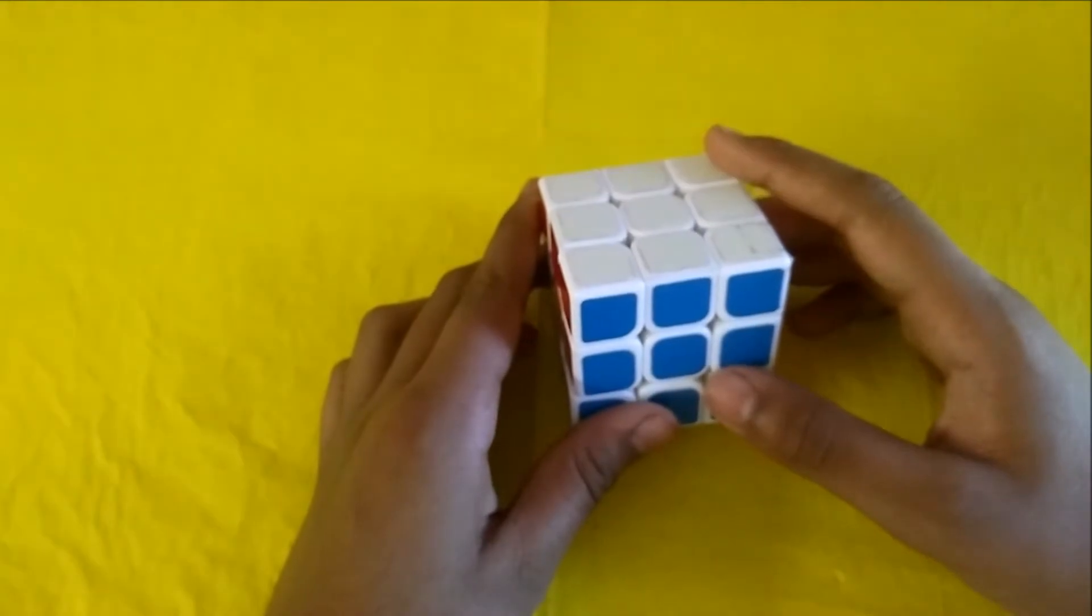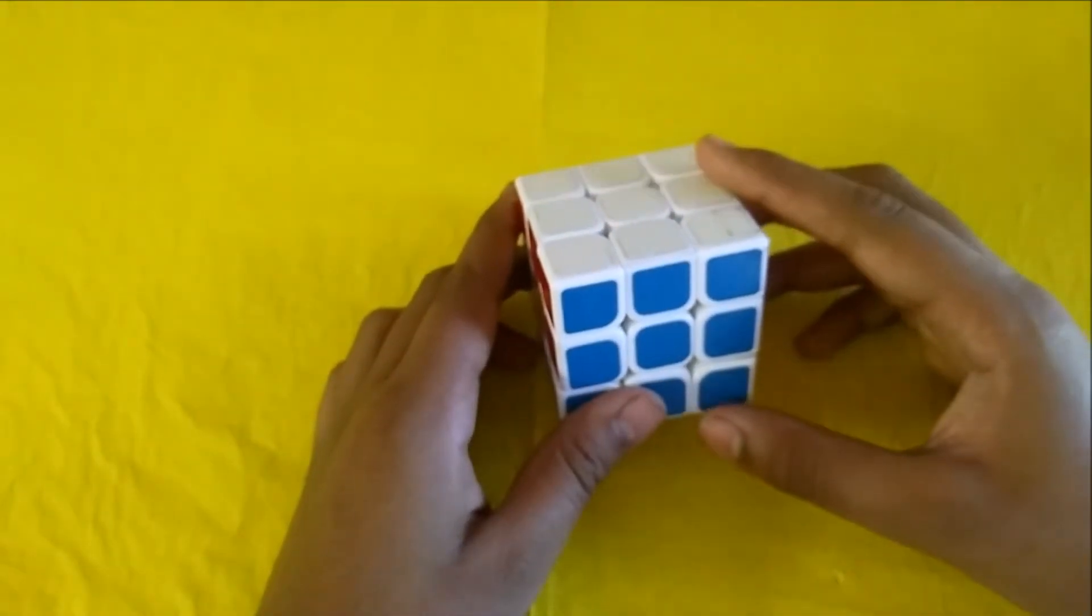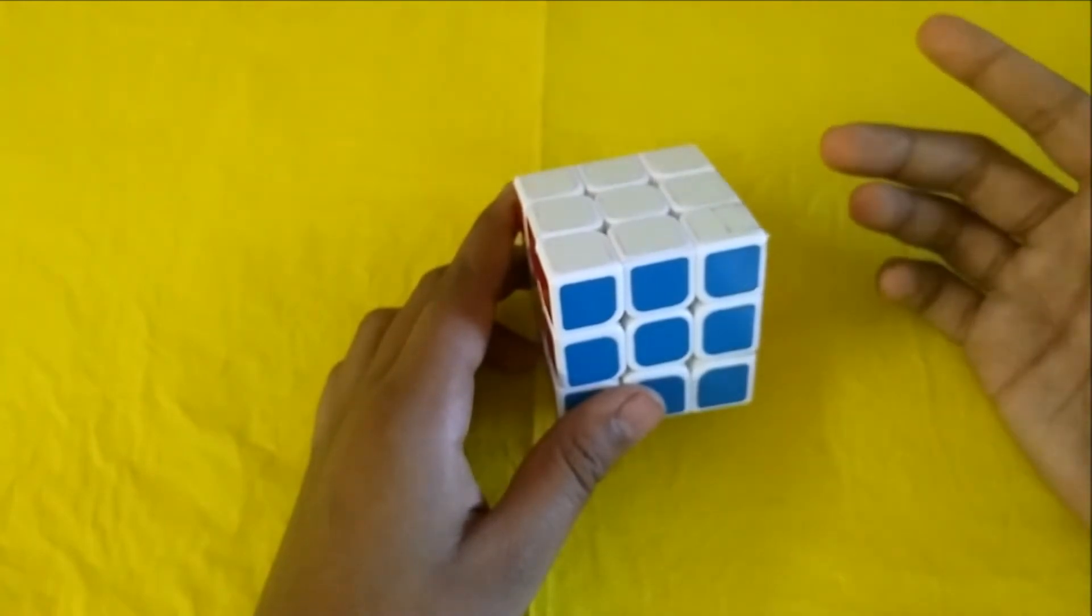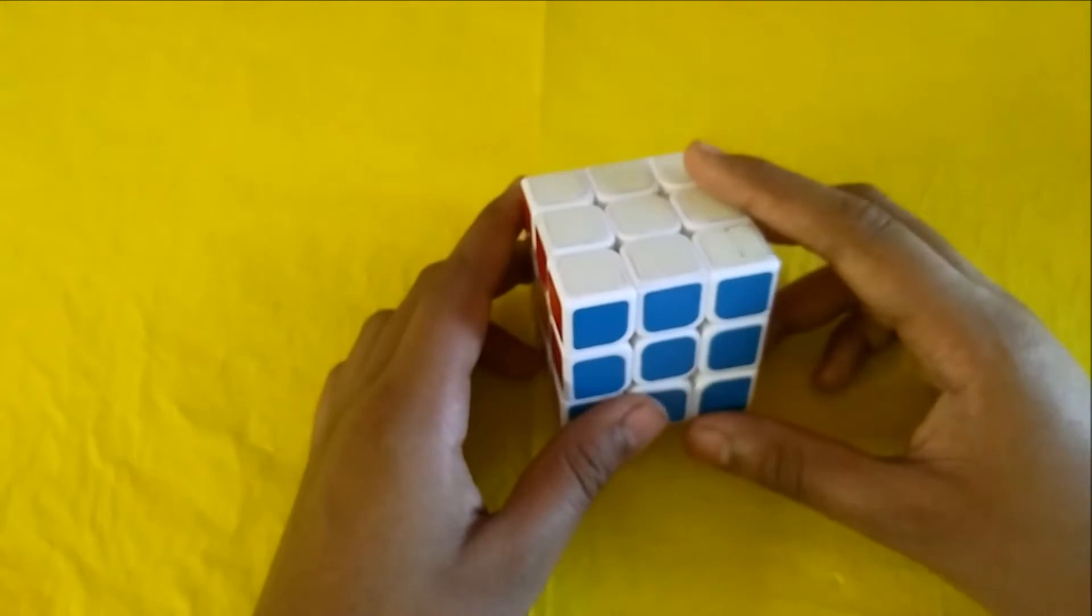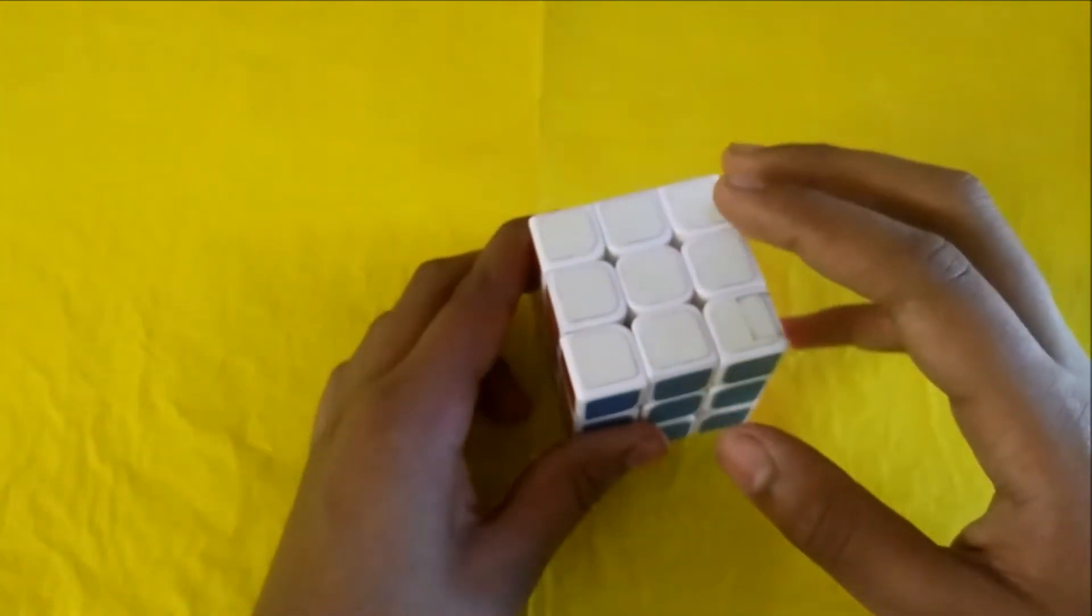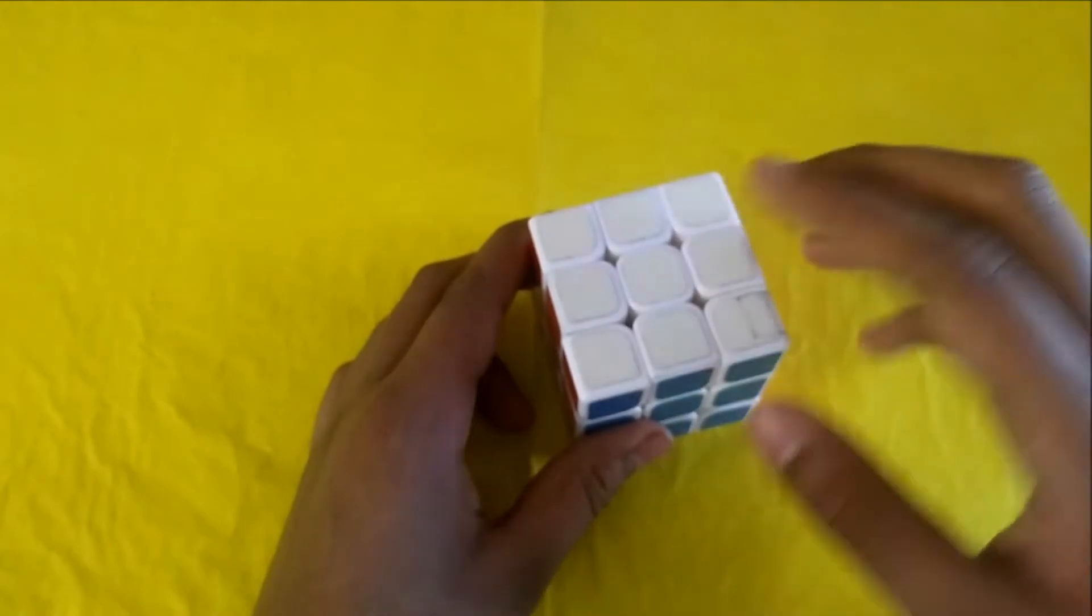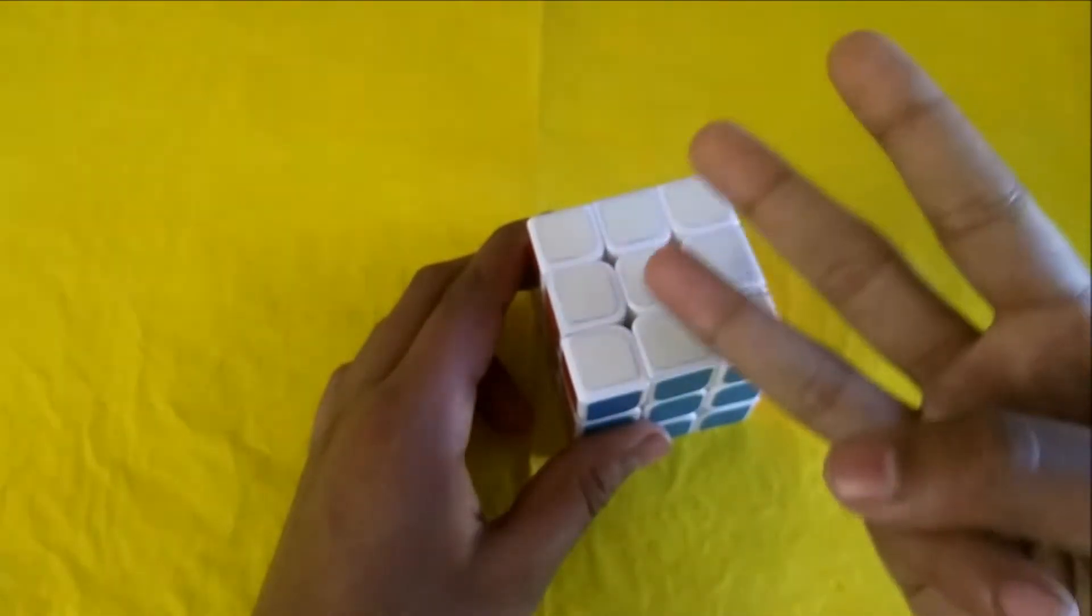Many YouTubers who solve Rubik's cube or make tutorials just tell algorithms like R, U, R prime, F prime, but in this video I am going to tell you what they mean. Then you can see how to solve the Rubik's cube first layer, second layer, and third layer.